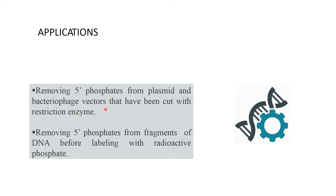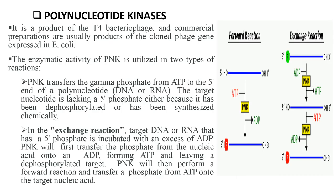Applications of alkaline phosphatase: it removes 5' phosphate from the plasmid and bacteriophage vectors that have been cut with restriction enzymes, and removes 5' phosphate from fragments of DNA before labeling with radioactive phosphate.